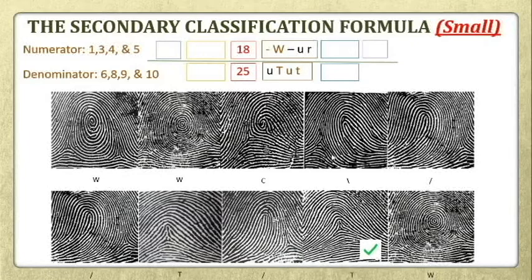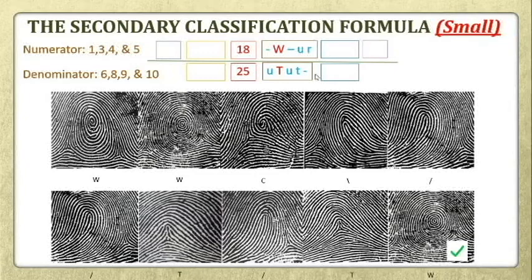Finger number 9 is a tented arc and will be represented by small letter T. Finger number 10 is also a plain whorl, so it will be represented by a dash. That is how your secondary classification formula is done.